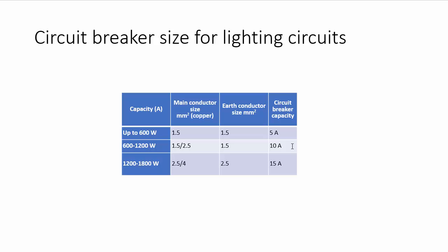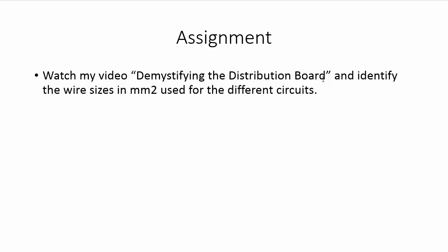That wraps up the wiring for the entire flat, encompassing the lighting circuit, power circuit and fixed equipment circuit. One last assignment: watch my video 'Demystifying the Distribution Board' where I explained the consumer mains wiring, and identify the wire sizes used — different wire sizes are used for lighting, power and fixed equipment. Thanks for watching this video. Subscribe to my channel for new updates. Till we meet next time, goodbye.